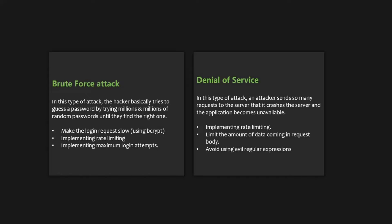The first is a brute force attack. In this type of attack, the hacker basically tries to guess a password by trying millions and millions of random passwords until they find the right one. One way to address this type of attack is by making the login request slow, and the bcrypt package that we are using actually does that. This type of attack can also be addressed by using rate limiting, which we are going to learn about in this lecture.